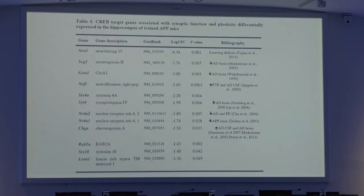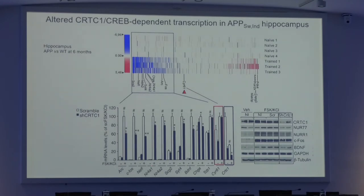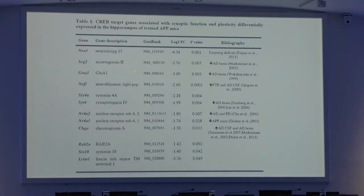When we surveyed the literature, we found that the levels of classical genes — c-Fos, neurofilament, NR4A1, NR4A2, synaptotagmin, and BDNF — were already published to be downregulated in Alzheimer's disease brains at different pathological stages. So most of the CRTC1-dependent genes we identified had already been shown to be downregulated in this pathological condition.